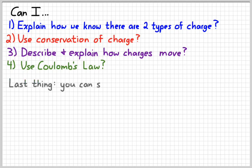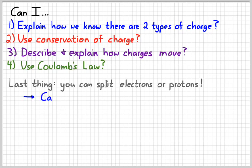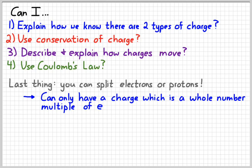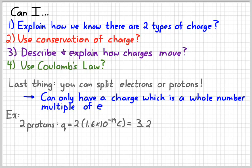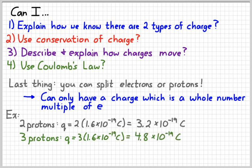And one last thing. Real quick little reality check here. You probably already know that you can't take electrons or protons and split them up into smaller pieces. And so what that means, as far as electricity is concerned, is that you can only have a charge that's a whole number multiple of the elementary charge, or E. So remember, that's the 1.6 times 10 to the negative 19 number. So for example, if you have two protons, the charge would be 3.2 times 10 to the negative 19 Coulombs. If you have three protons, the charge would be 3 times 1.6, which would be 4.8 times 10 to the negative 19 Coulombs.